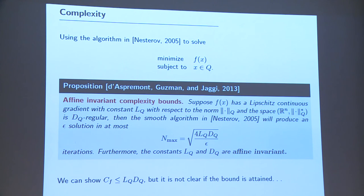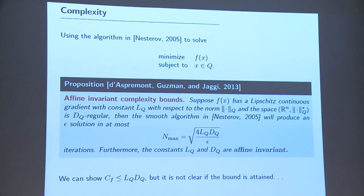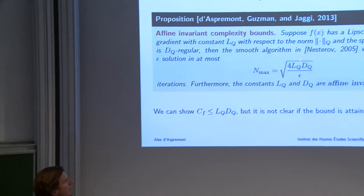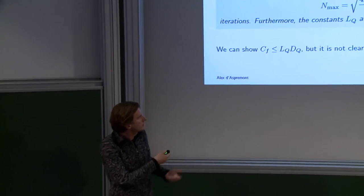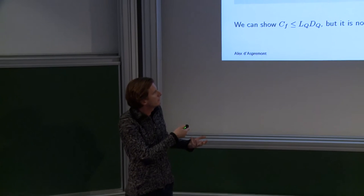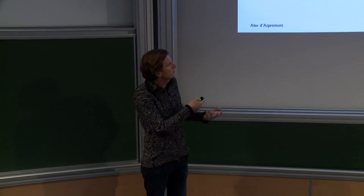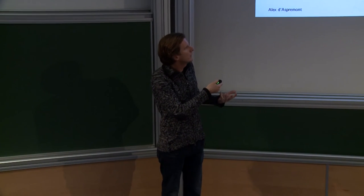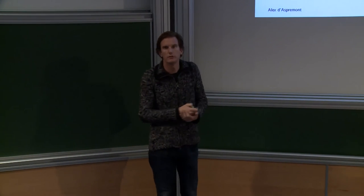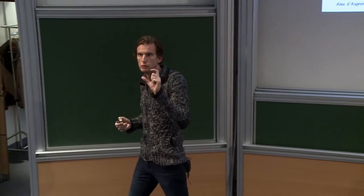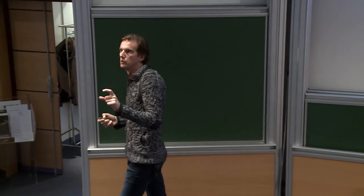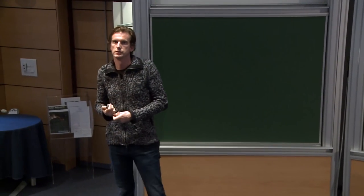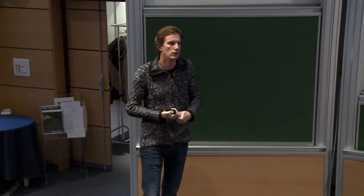At least we've solved our first problem: the numerator in this complexity estimate still has optimal dependence in epsilon, and now we also have affine invariance of the numerator with respect to an affine change of coordinates.